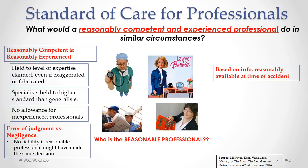In determining whether someone was reasonably competent and experienced in a particular situation, we have to base it on the information that's reasonably available at the time of the accident. It's always easy to look at information that comes to light after an accident to assess whether someone was negligent — but that would be an unfair way of assessing negligence. We have to base it on the information that was reasonably available at the time of the accident.